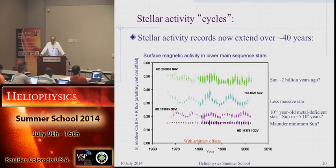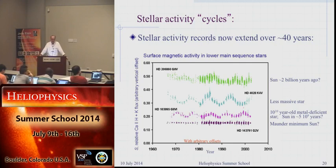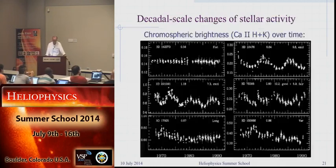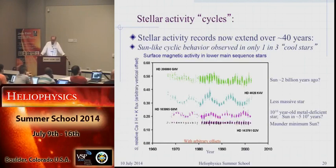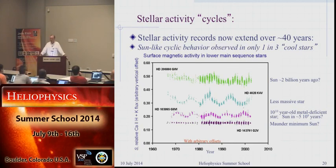Stellar cycles are an interesting phenomenon. We have about 40 years of records from Olin Wilson's Mount Wilson survey—he observed stars for some 20-odd years, then others took over until funding was discontinued, creating a gap in the records. Sun-like cyclic behavior is observed in only one in three cool stars. So the sun is typical of its kind, but some of its kind don't cycle. Most of the active, younger stars don't show an obvious cycle—they may be more chaotic or have multiple cycles on the surface. This is something for dynamo theorists to explain.